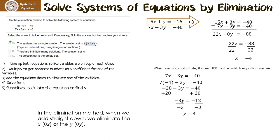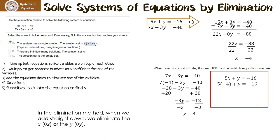Let's say you didn't use the second equation and decided to use the first — it's going to turn out exactly the same. I'm going to substitute negative 4 in for x. 5 times negative 4 is negative 20. I add 20 to both sides, which gives us y equals 4. So you see, it really doesn't matter which equation you use, but you only have to use one of them.